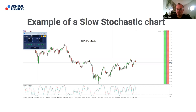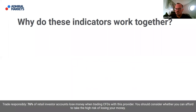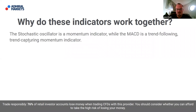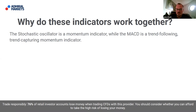Before we combine the slow stochastic and the MACD within the trading strategy, let's answer why these indicators work together so well. The stochastic oscillator is a momentum indicator, while the MACD is a trend-following, trend-capturing momentum indicator. When someone asks what kind of trader I am — I'm a combination trader. Most of the time I'm in a pro-cyclical position following the trend.